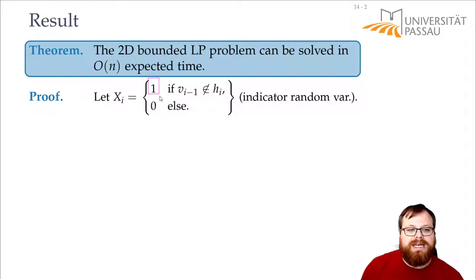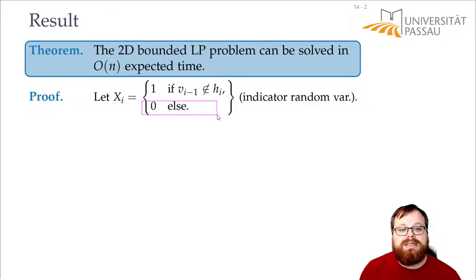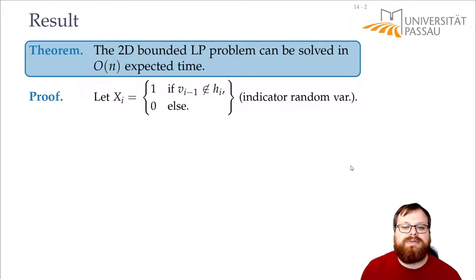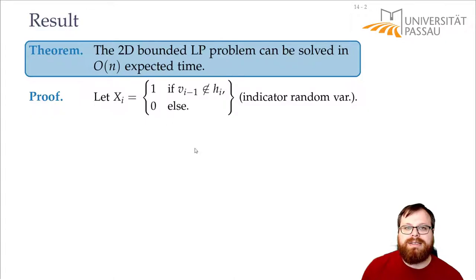The variable xi is 1 if our optimum does not lie in the half plane that we add, so if the optimum has to change. And xi is 0 if the optimum lies in the half plane, so if it doesn't have to change. The running time of step i is O(i) in the first case and O(1) in the second case.